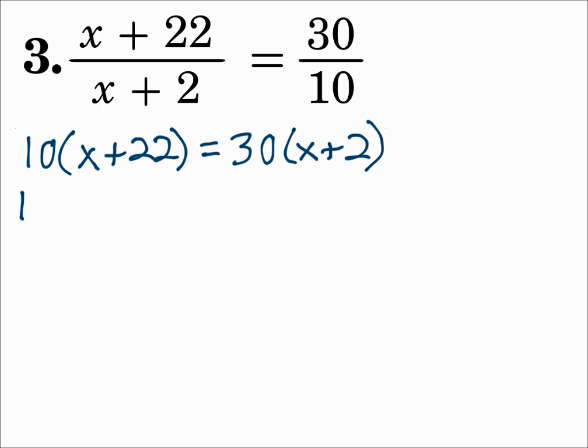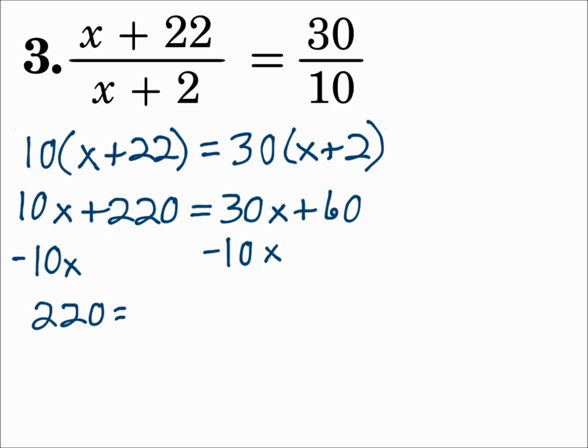Distribute. 10 times x is 10x. 10 times 22 is 220. Equals 30 times x is 30x. And 30 times 2 is 60. Now get the x's on one side. We'll subtract 10x from each side to get the x's on the right. So 220 equals 20x plus 60.